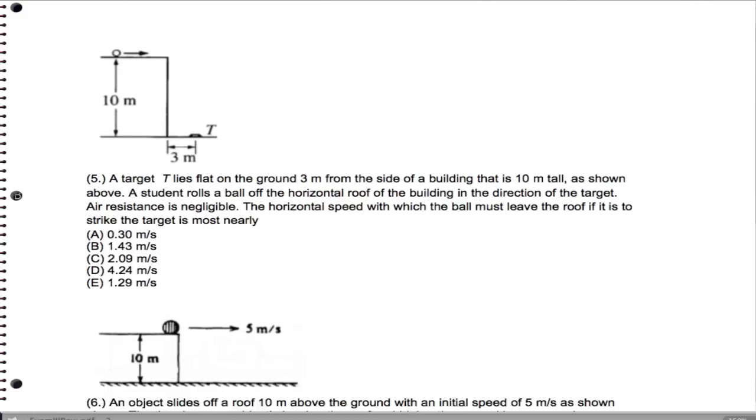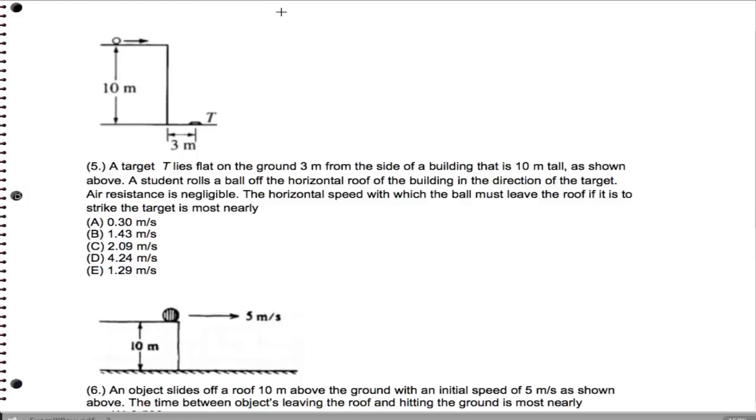Now, continuing. We have a target that lies flat on the ground. So read the question. We want the horizontal speed it has to leave the roof if it's going to land here. In other words, what we need to get first is the time it takes to fall. So we're going to use y equals one-half gt squared plus 0t, because its initial y speed is 0, this is horizontal. Plus whatever its original height is.